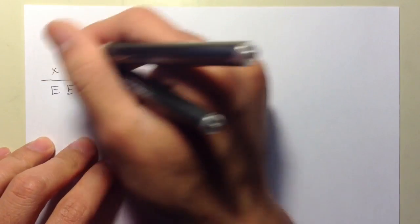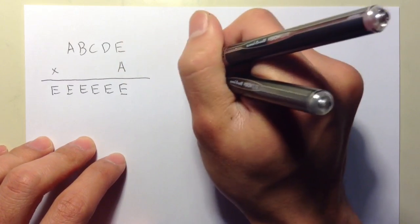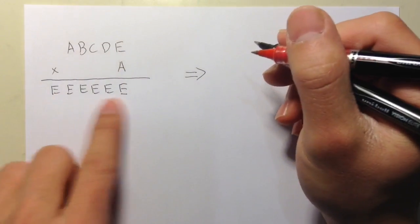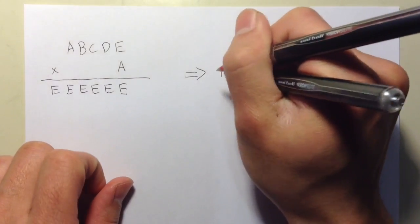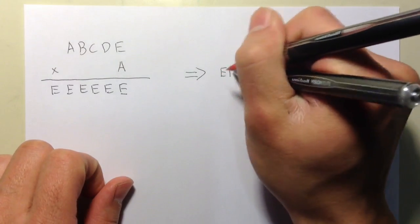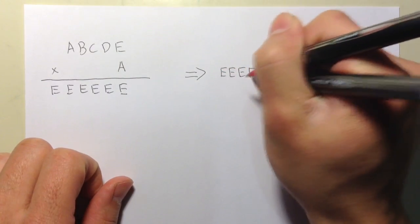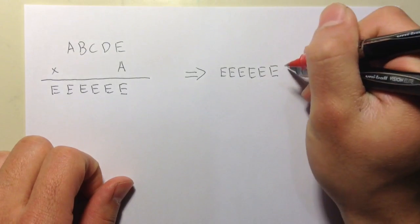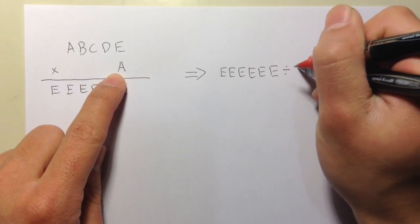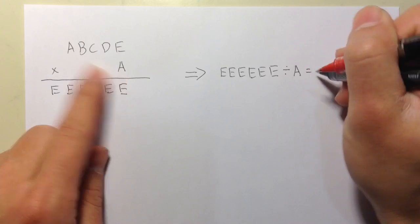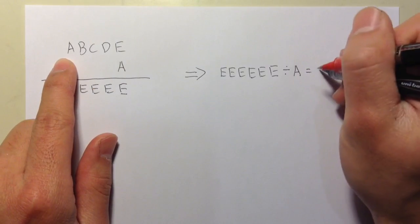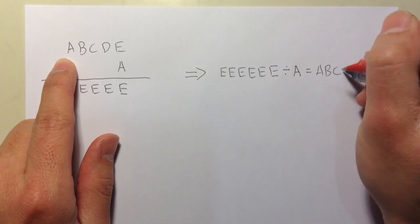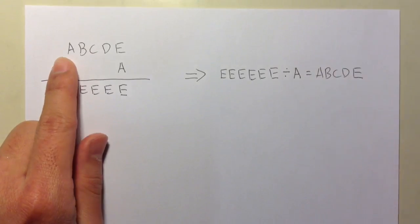This is the way I do it. Instead of a multiplication problem, I'm going to look at this as division. I'm going to take the result — six E's — and then divide by the number A, and I want to get a five-digit number with different digits: A, B, C, D, E. So I'm going to approach it using division instead of multiplication.